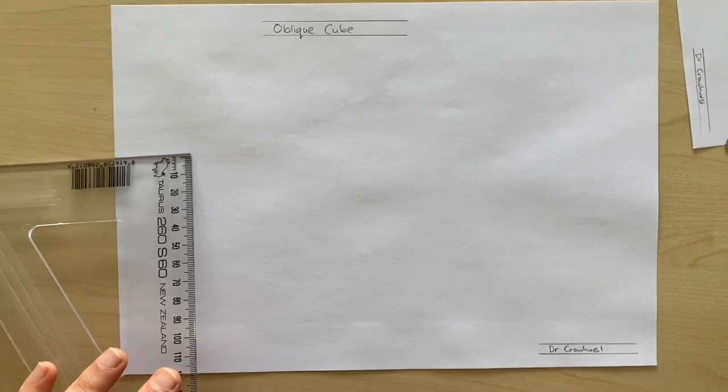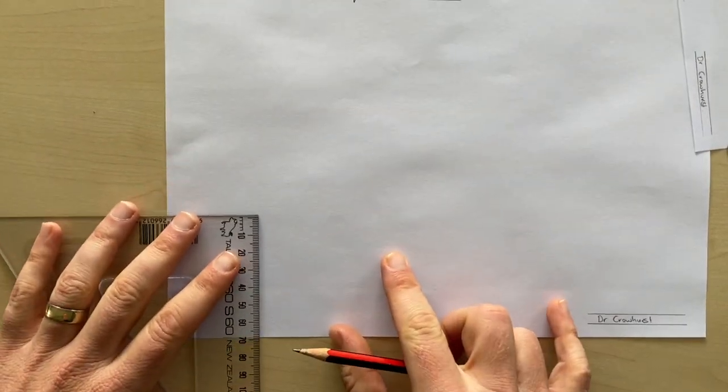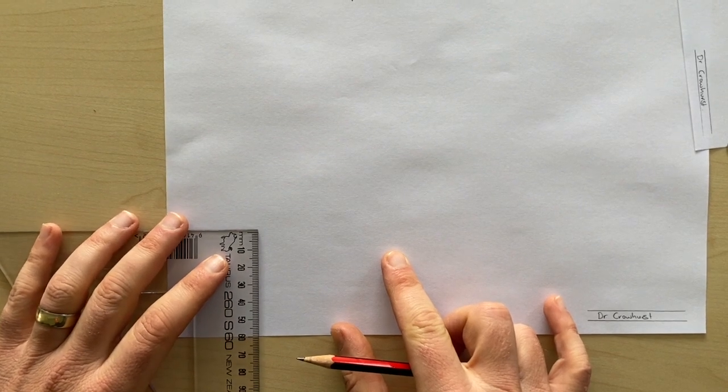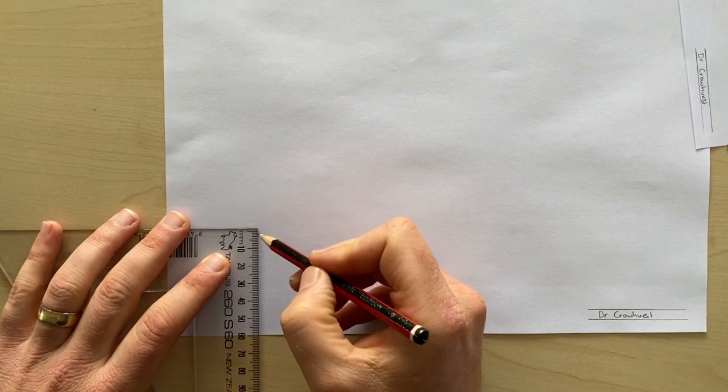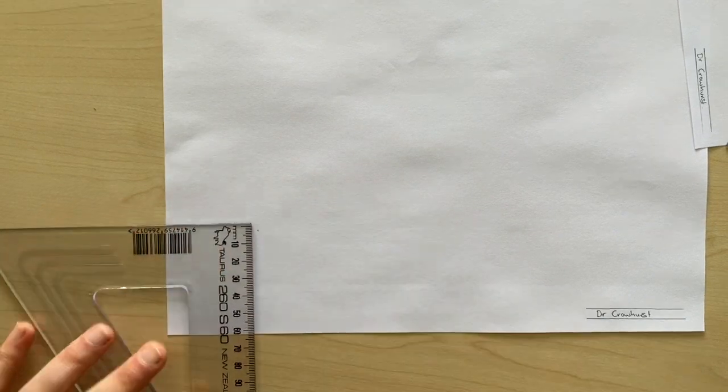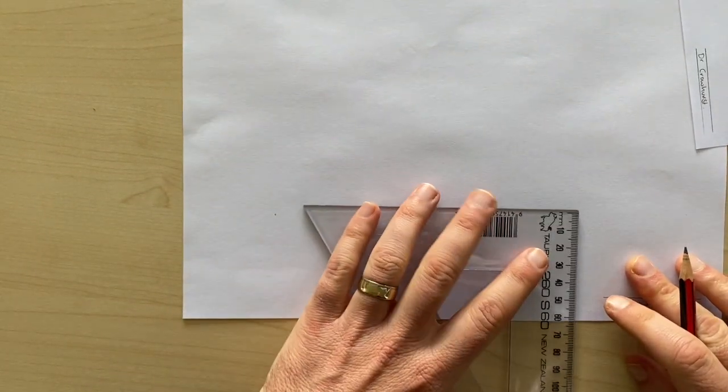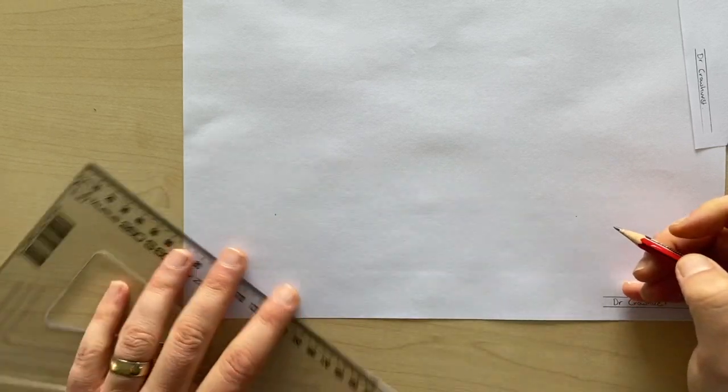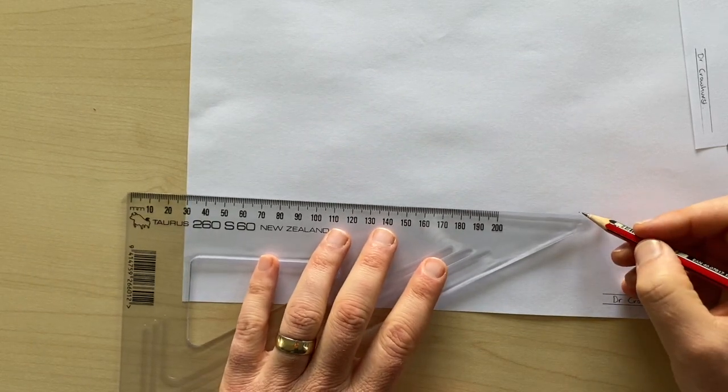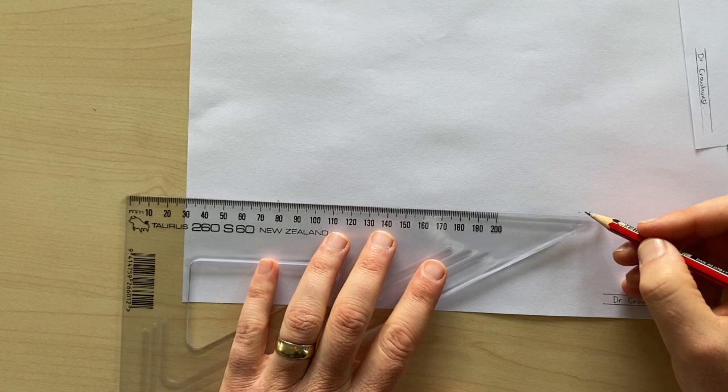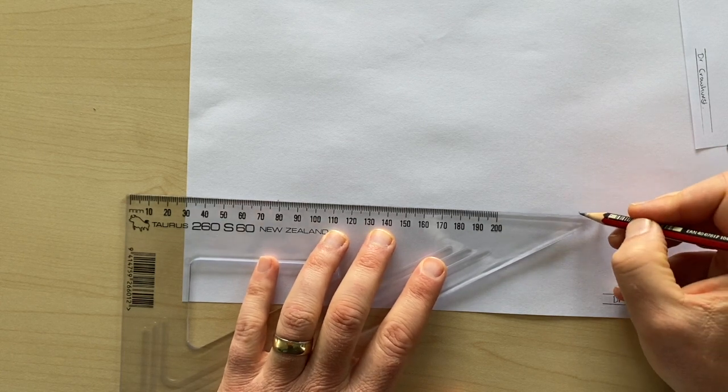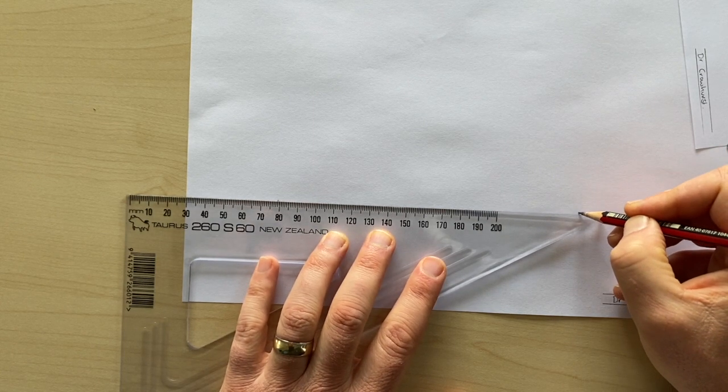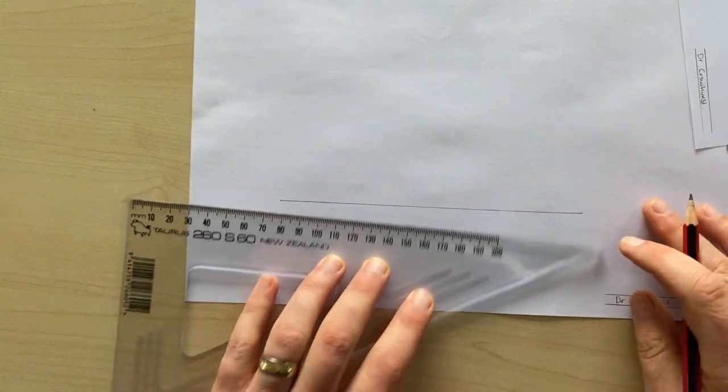To start off with our cube, we're going to measure six centimeters from the bottom and we're going to draw a line that's parallel with the bottom. You see how I'm just making these marks either side. There we go.